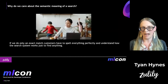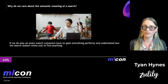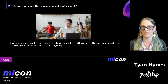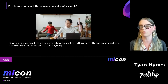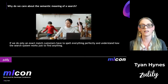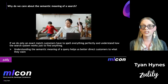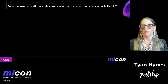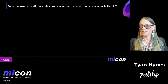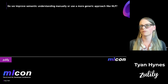If we only do an exact match, customers have to spell everything perfectly and understand how your search system works just to find anything. Customers are really busy — especially now when the lines between home and work are blurred and people have kids at home or are taking care of pets. Understanding the semantic meaning of a query really helps us better direct customers to what they want. But how do we go about doing that — do we do something very manual, or take a more general approach like NLP, natural language processing?